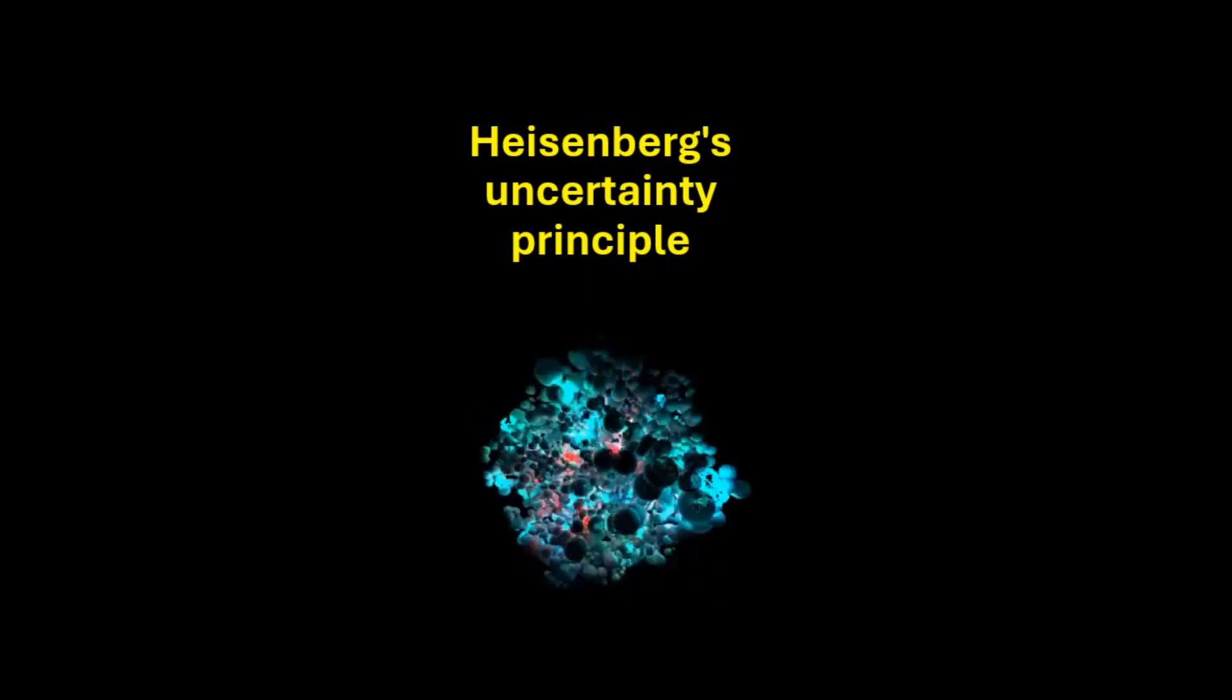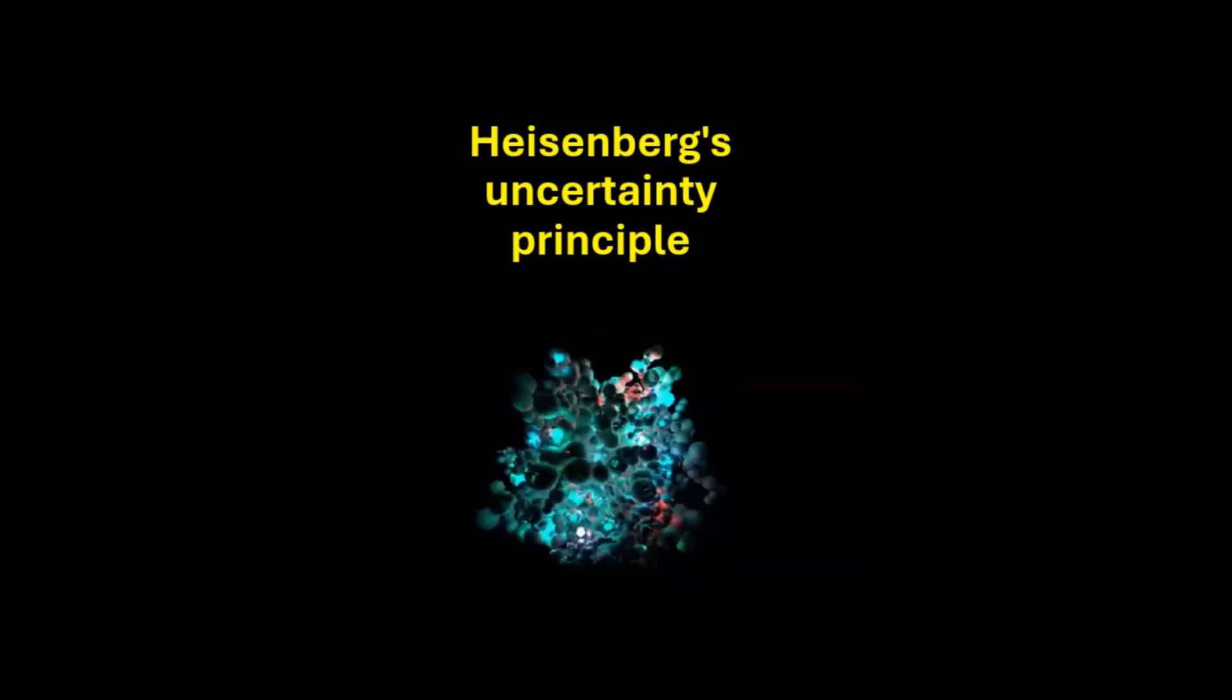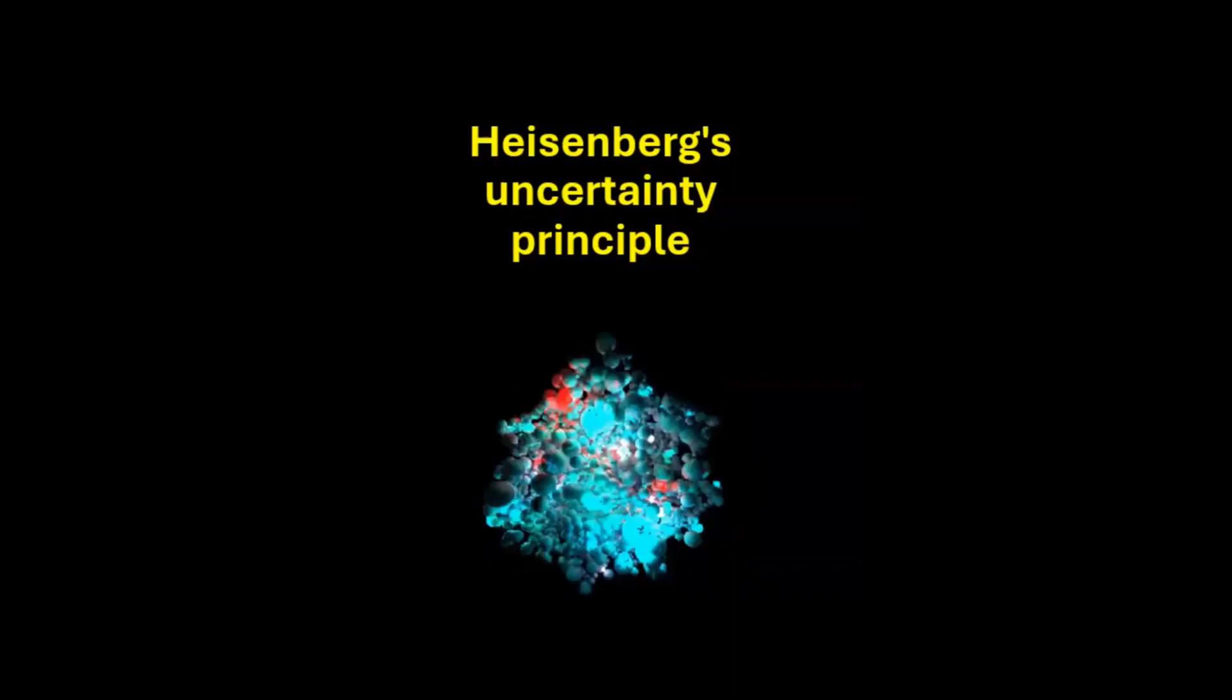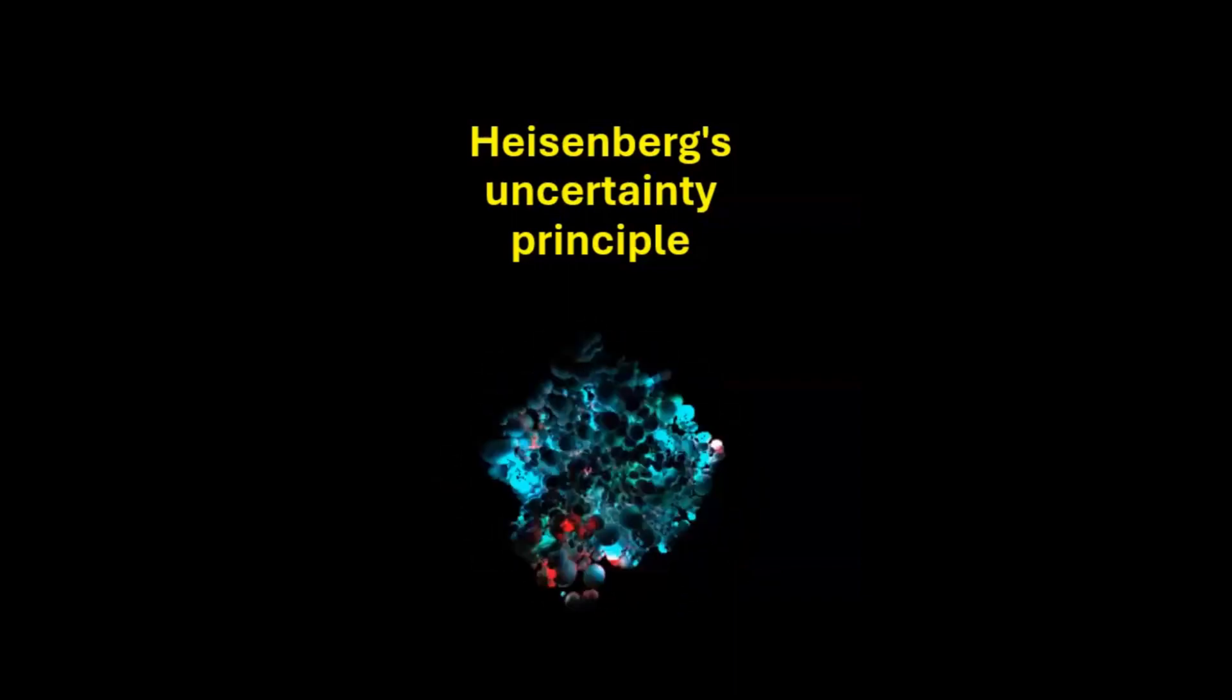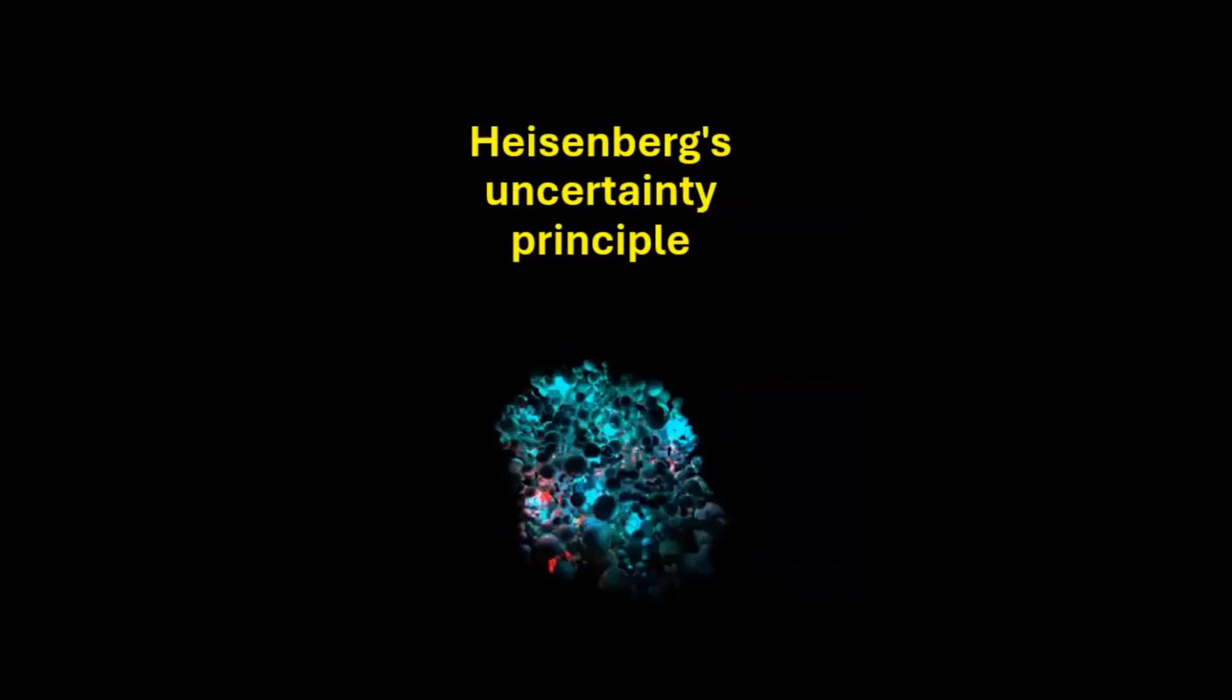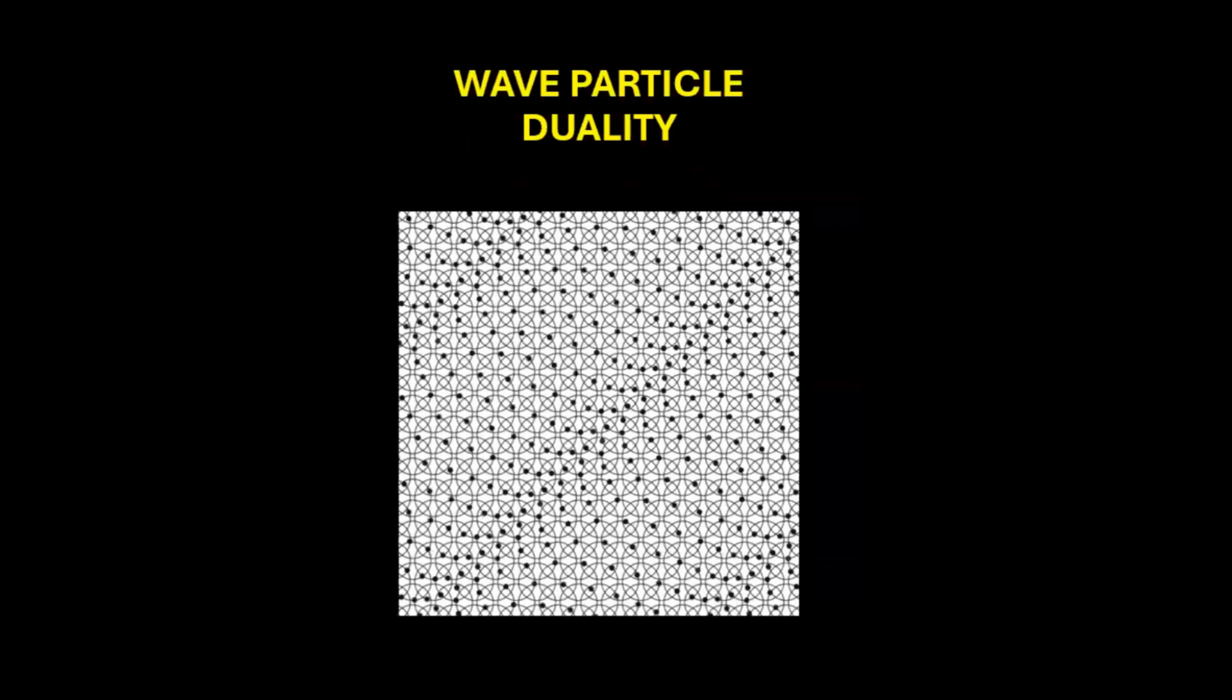It arises from the inherent nature of quantum mechanics where the more accurately one property is measured, the greater the uncertainty in the measurement of its complementary property. According to wave-particle duality, particles can act like both waves and little localized bits.